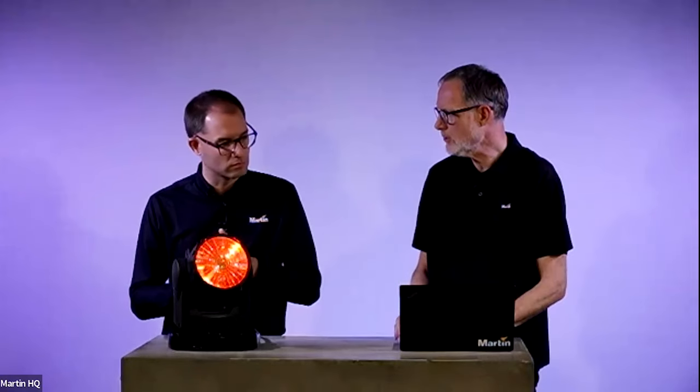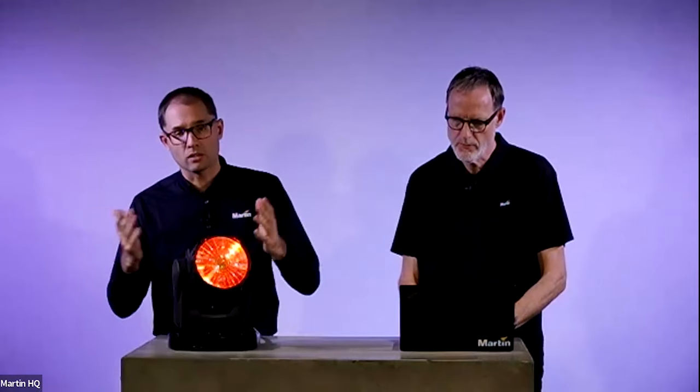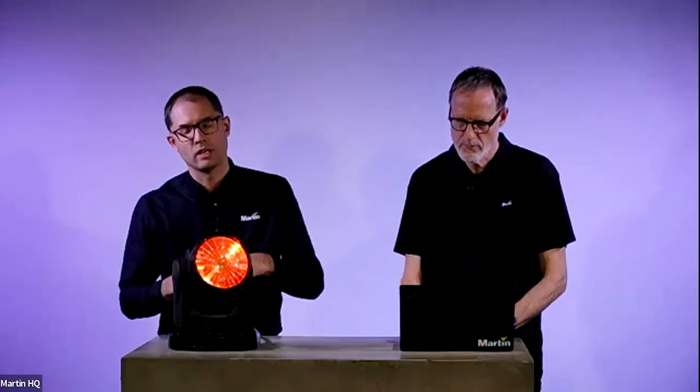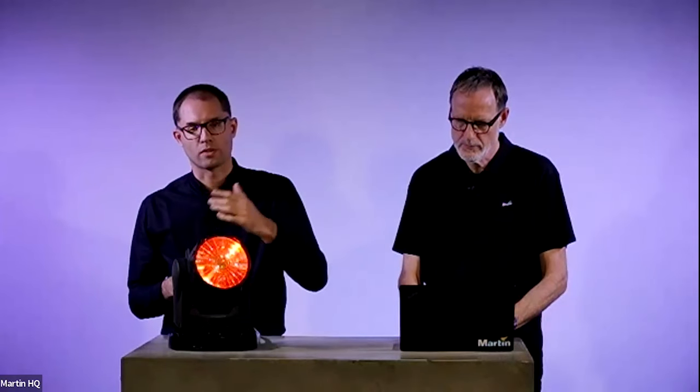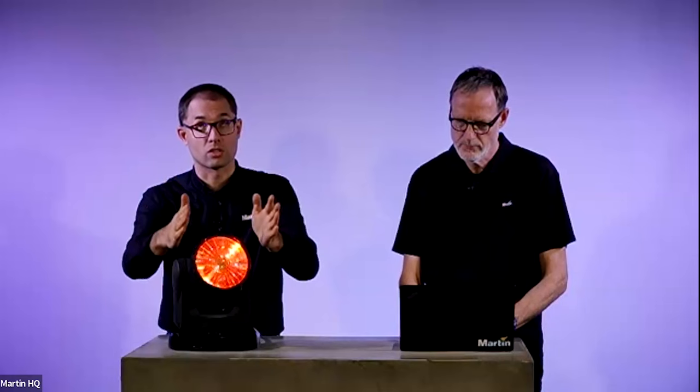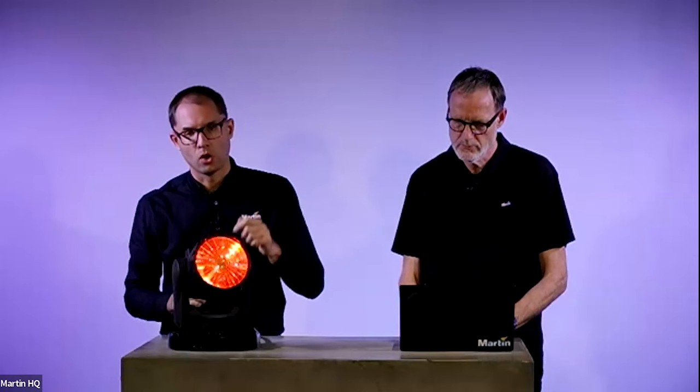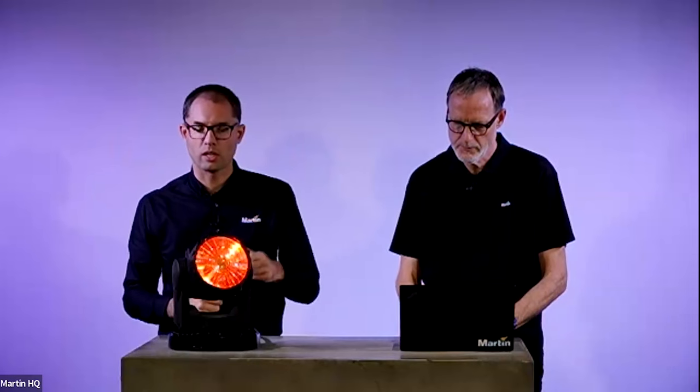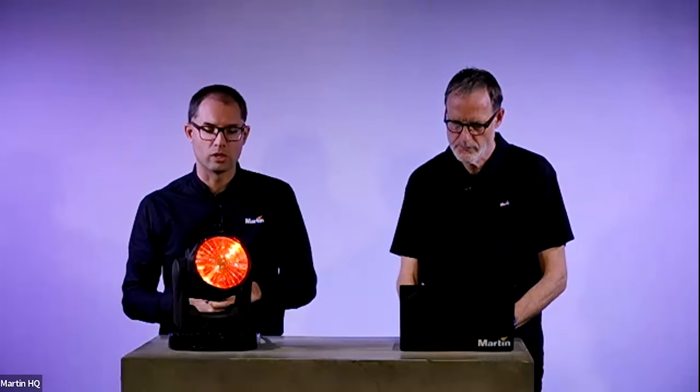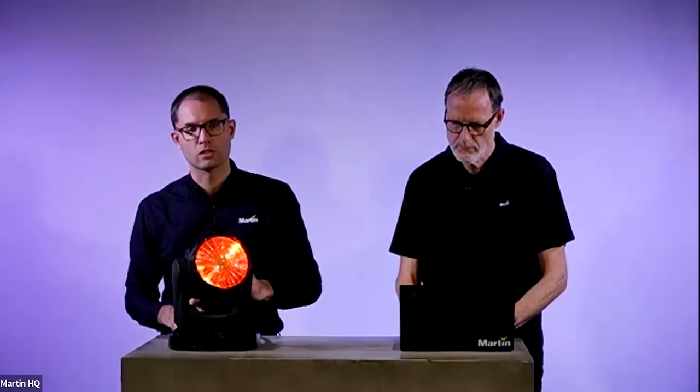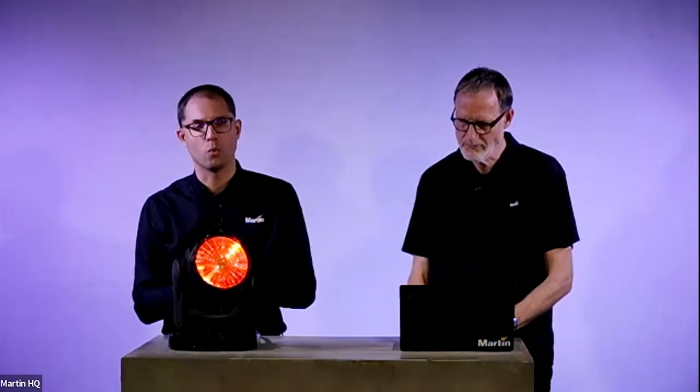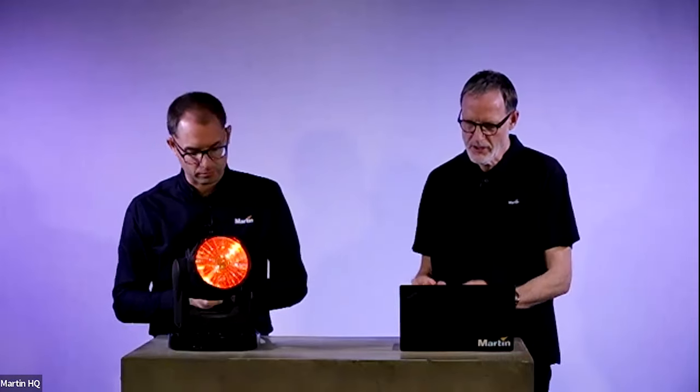In terms of the zoom range, can you recap on the zoom from narrow to wide? In beam angle, so half peak, it's from 4 degrees to 21. In field angle, so one tenth peak, it goes from 6 to 27. What you also get with the fixture is a soft lens included in the box. When you click on the soft lens, the zoom range of course expands further. So you get a wider wash out of the fixture as well.